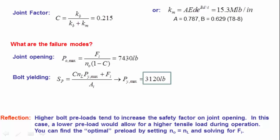So a brief reflection here. The higher bolt preload, and here we have a 90% preload, that tends to increase the factor of safety on the joint opening condition. So in this case, if I had lowered that preload, perhaps down to 0.85 or 0.8, that would allow the bolt yielding force to get higher, and it would reduce the joint opening force. So if you want to optimize your joint, you can choose a preload. If you set NO, so the opening safety factor, equal to N sub L, and then use that equation to solve for FI, that will give you your optimal initial preload for your joint.